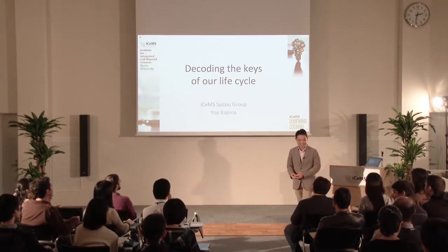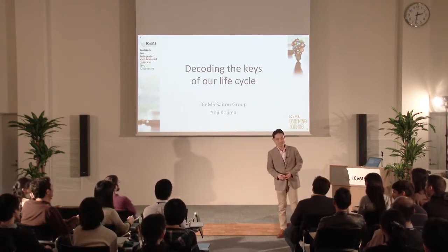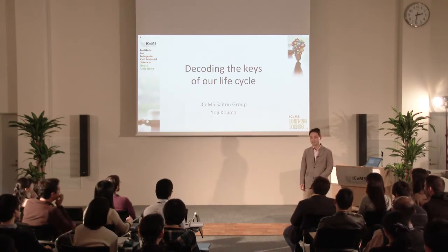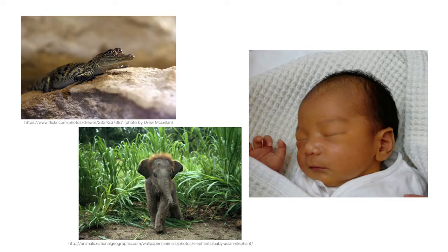Good afternoon everyone. I'm Yosuke Kojima from Saito Group. The title of my talk is Decoding the Keys of Our Life Cycle. My story starts from here. This is the photo of a baby crocodile, a baby elephant, and a one-year-old baby — it's my son.